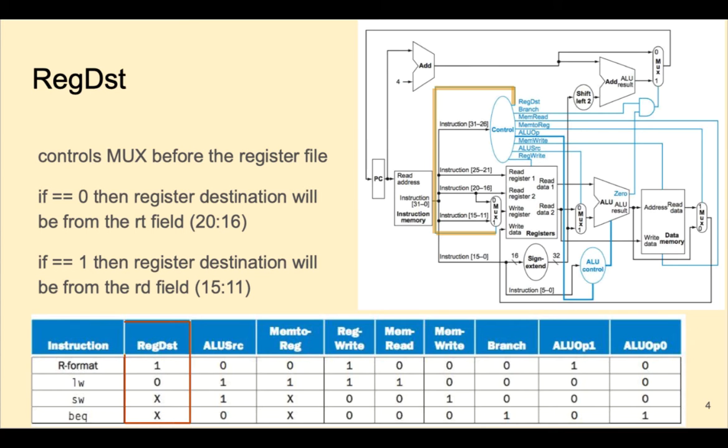Regdest determines which register, RT or RD, is the destination register. For a load word instruction, the destination register is RT.